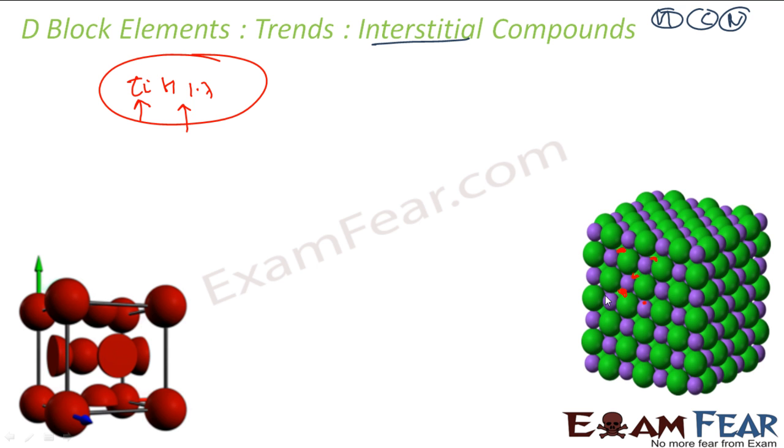And these non-stoichiometric compounds, if you want to define, they are a chemical compound that can't be represented by a ratio of well-defined rational numbers. For example, CO2 is a well-defined rational number. This is TiH 1.7, not a well-defined rational number. These are non-stoichiometric compounds. Typically, in this case, small molecules are trapped and they are trapped in any ratio. They don't have a proper bond.